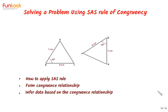Let's summarize what we have learned from this question. We learned how to apply the SAS rule, how to form a congruence relationship, and how to infer data based on that relationship. Specifically, we inferred that angle ACB is equal to angle QPR after establishing the congruence of the two triangles.